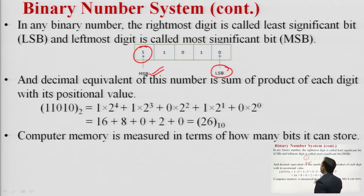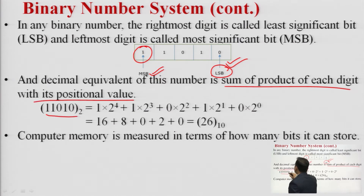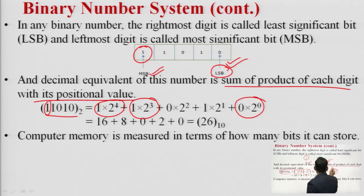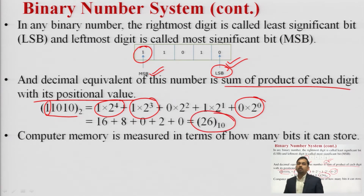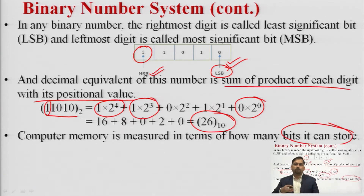The leftmost is MSB and the rightmost is LSB. The decimal equivalent of a binary number is the sum of products of each digit with its positional value. For 1 1 0 1 0: 1×2⁴ + 1×2³ + 0×2² + 1×2¹ + 0×2⁰ = 26. So we have converted the binary number into decimal 26 at base 10. Computer memory is measured in terms of bits — kilobyte, megabyte, gigabyte, terabyte, and so on.